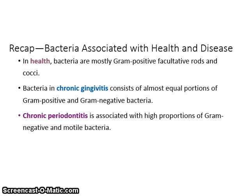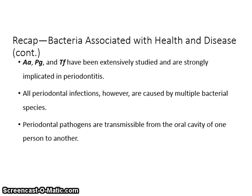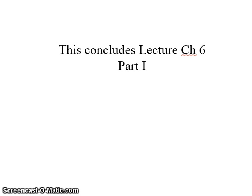To recap: in health, bacteria are mostly gram-positive, facultative rods, and cocci. Bacteria in chronic gingivitis consist of almost equal portions of gram-positive and gram-negative bacteria. Chronic periodontitis is associated with high proportions of gram-negative and motile bacteria. The World Workshop of Periodontology designated three bacteria as periodontal pathogens: AA, TF, and PG. AA, PG, and TF have been extensively studied and are strongly implicated in periodontitis. All periodontal infections, however, are caused by multiple bacterial species. Periodontal pathogens are transmissible from the oral cavity of one person to another. This concludes Lecture, Chapter 6, Part 1.